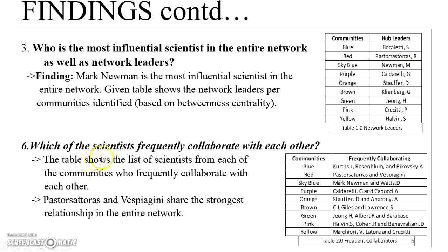I also identified scientists who frequently collaborate with each other. For example, scientists R. Pastor-Torres and Vespignani share the strongest collaboration tie across the entire network, meaning they have frequently co-authored many scientific papers. Table 2.0 lists scientists who have been frequently collaborating from each community. For example, scientists Mark Newman and Watts are the scientists from the sky blue community who frequently collaborate, while from the purple community, scientists Cardali G. and Kaposhi A. are the frequent collaborators.